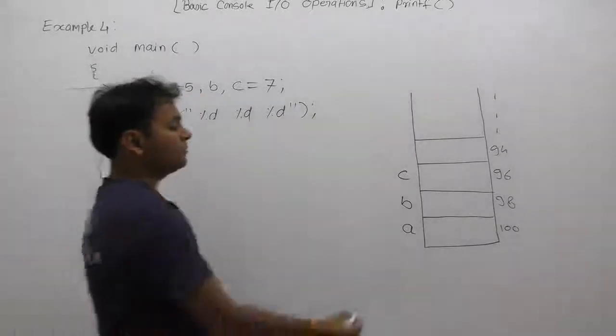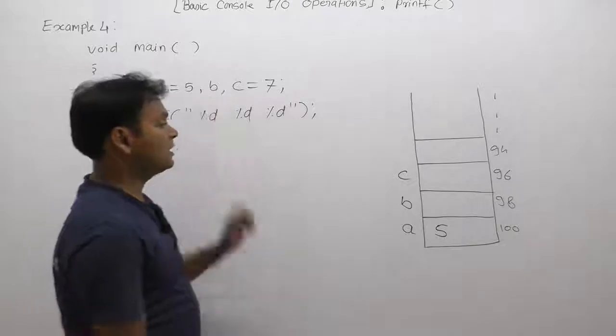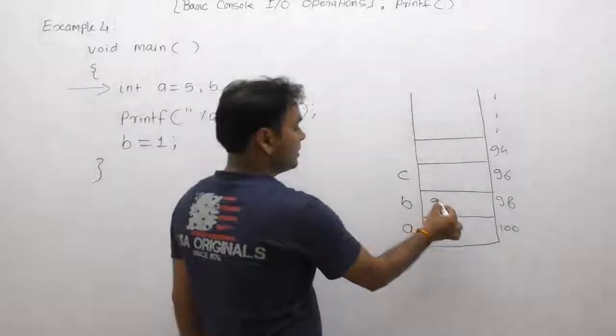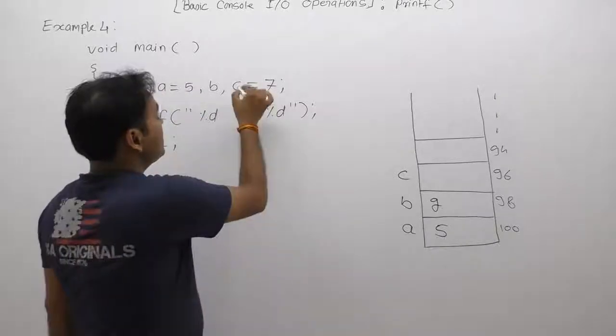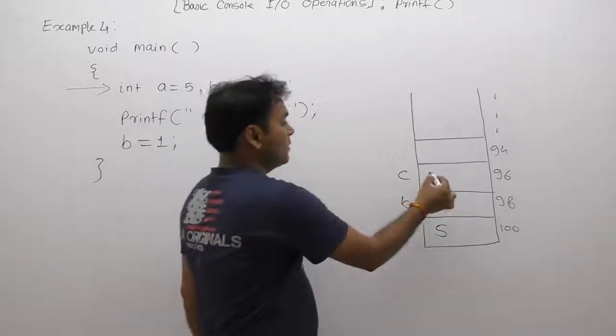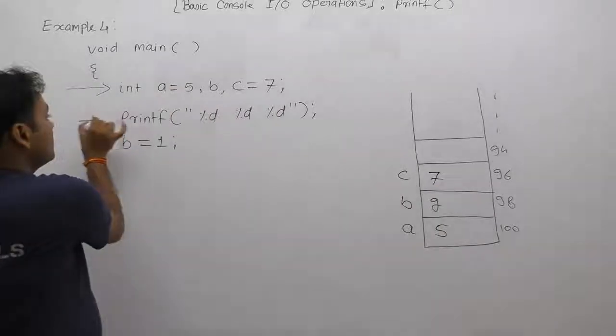a is initialized by 5, but b is not initialized here. Therefore we are considering some unknown value as garbage. Next, c memory space will be allocated for c, and c is initialized by a manual value.